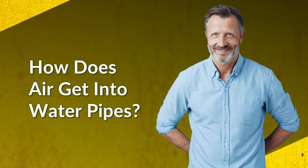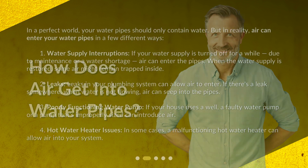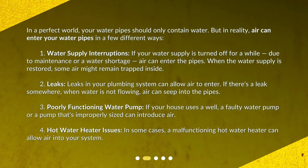How does air get into water pipes? In a perfect world, your water pipes should only contain water. But in reality, air can enter your water pipes in a few different ways. First, water supply interruptions: if your water supply is turned off for a while due to maintenance or a water shortage, air can enter the pipes. When the water supply is restored, some air might remain trapped inside.